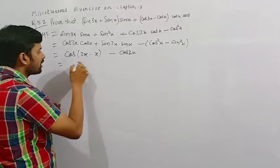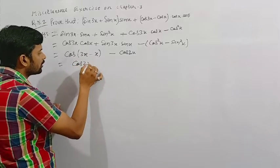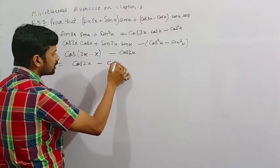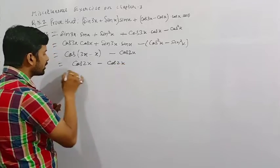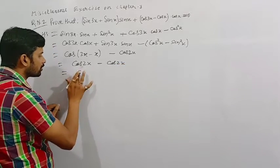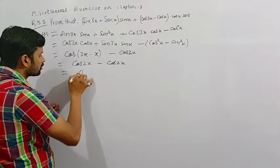This is what? 3x minus x, 2x. So this becomes cos 2x and minus cos 2x. After all this becomes what? 0. This becomes 0. And this is the RHS.